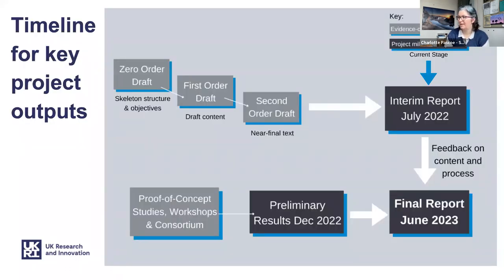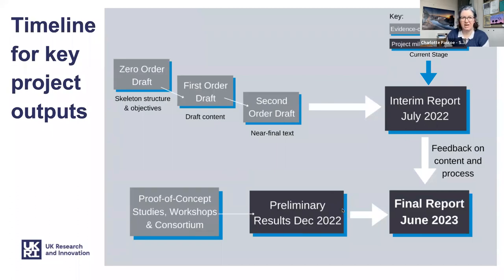So where are we in our timeline? Right now we're at the interim report stage, which was released in August. We've also kicked off a number of proof-of-concept studies, which will give us some preliminary results at the end of the year, with a workshop sharing information together at the beginning of next year. All the results will be drawn together in our final report in June 2023 — it's quite a tight time schedule.